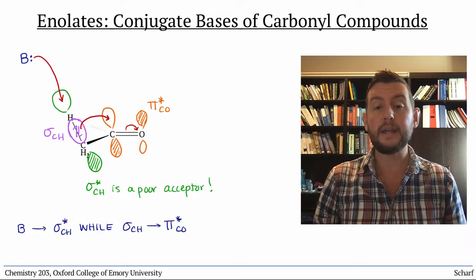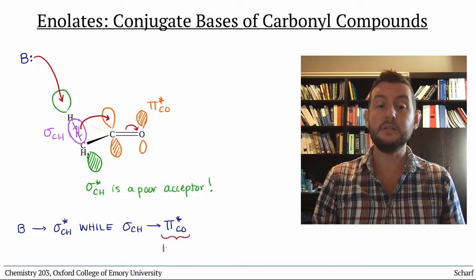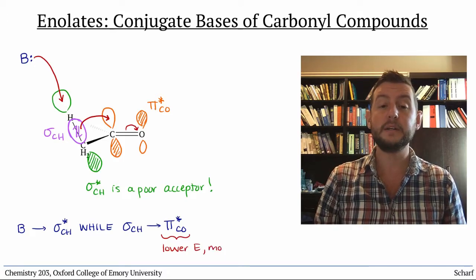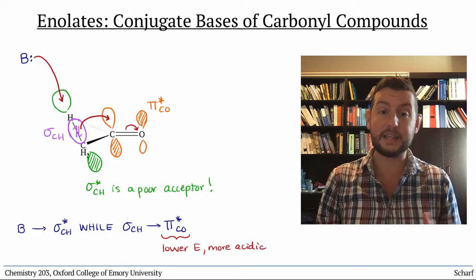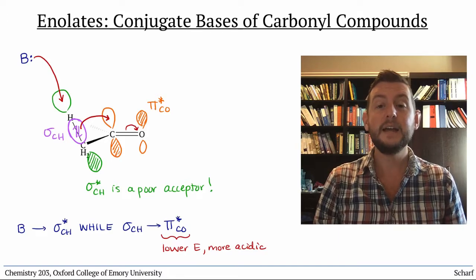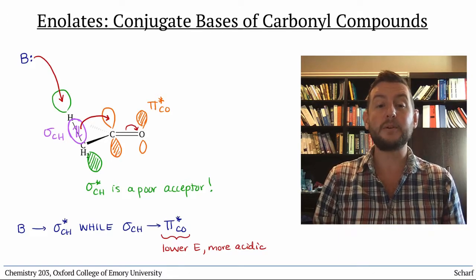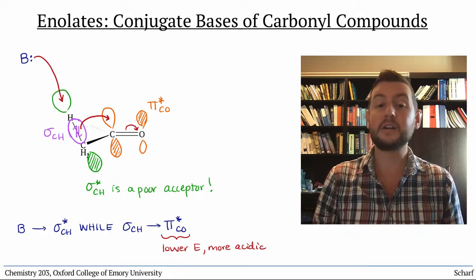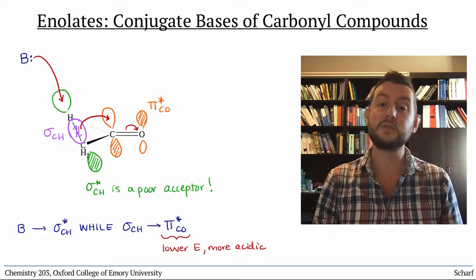So the lower in energy a pi star CO, the more electrophilic the carbonyl group, the more acidic its alpha protons, hence why the alpha protons of esters are less acidic than those of ketones or aldehydes.